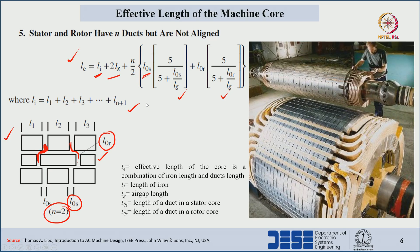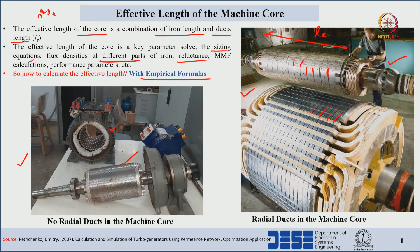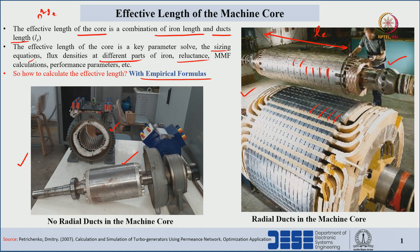So these are the five different cases to find the effective length of core. By utilizing these empirical formulas we can find the effective length of core. Once we know the LE value, we can use it to find the sizing equations, flux densities at different parts, MMFs, reluctance, and so on. We will utilize these equations in the coming lectures. In this lecture we have discussed the empirical formulas to find the effective length of the core. Thank you.